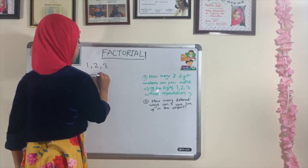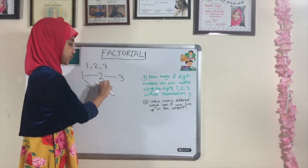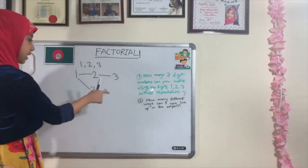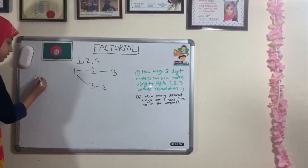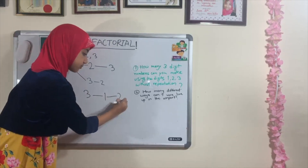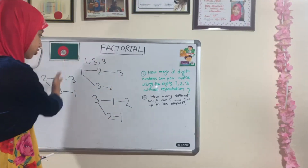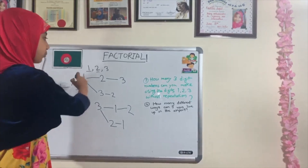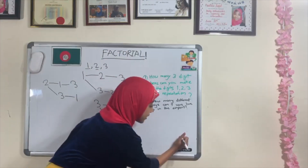Starting with 1, you can pair it with 2 and 3. Then swap those two numbers — so we get 1-2-3 and 1-3-2. Moving on to 2, you can pair it with 1 and 3, then swap to get 2-1-3 and 2-3-1. Without any repetition, let's count: one, two, three, four, five, six. So the answer was six — I'll write that down.